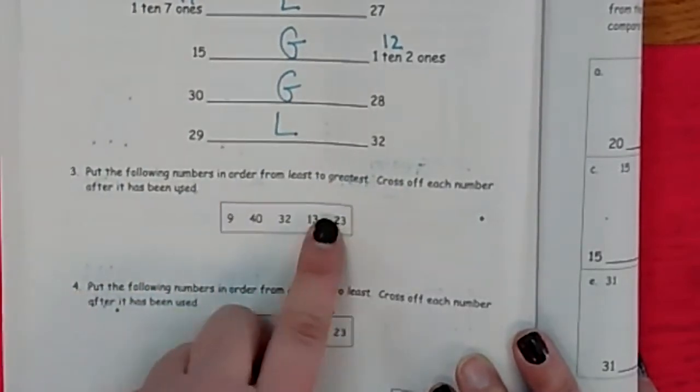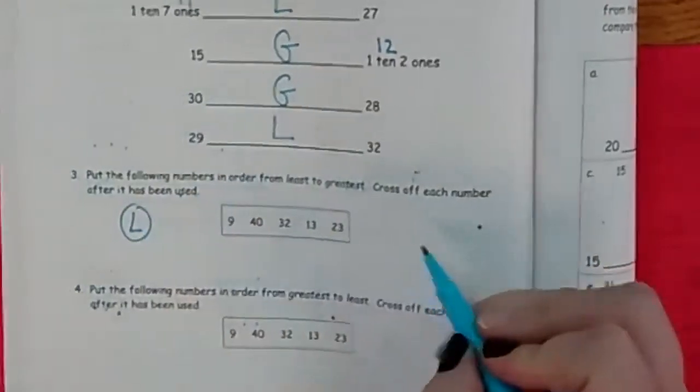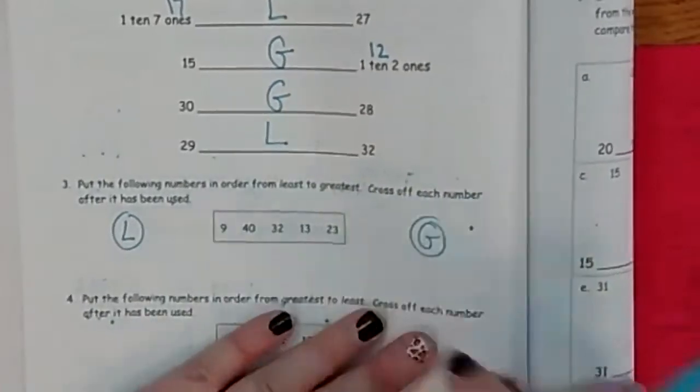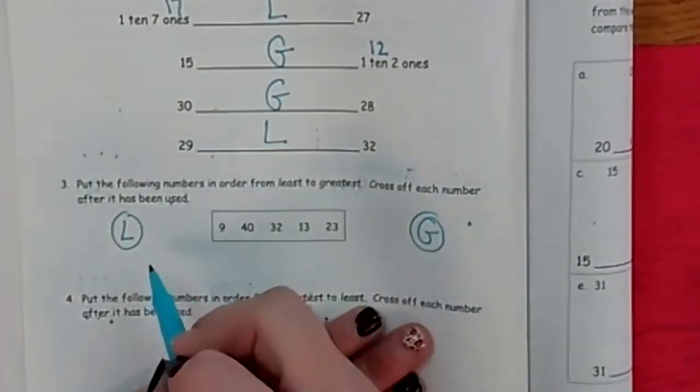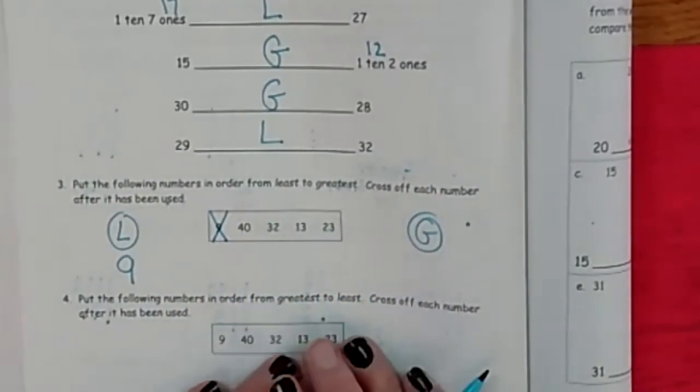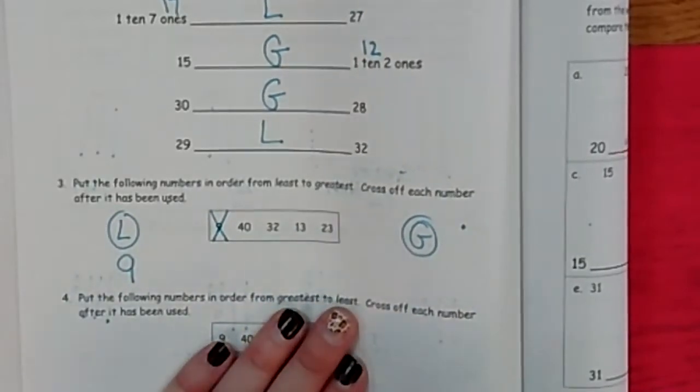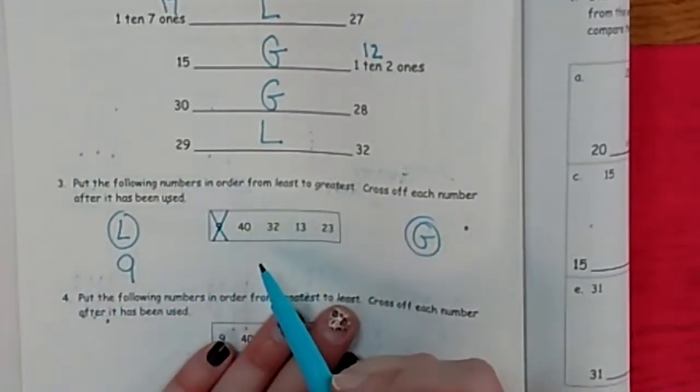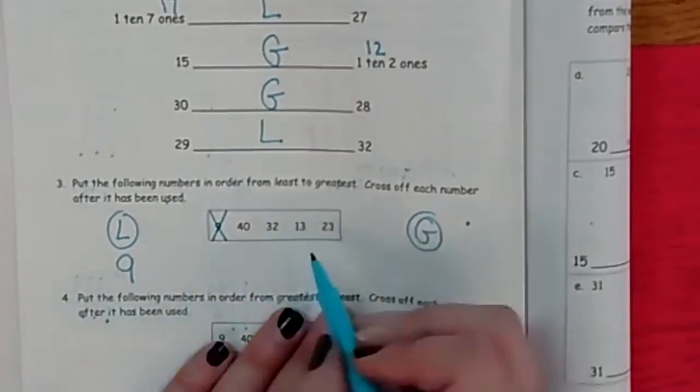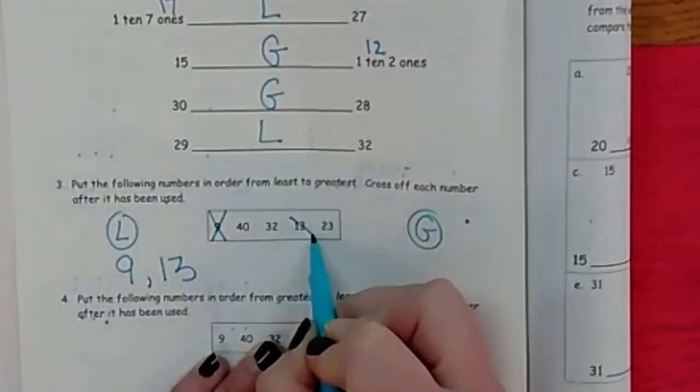This is where they try to trick us again, but we don't get tricked. We need to put these in order from least, I'm going to put a letter L over here, to greatest, put a letter G over here. So look here in this box, find the smallest number. You're right. So put the nine by the L and then cross it out because we did it. Try to keep them neat and separated because you don't want to mix them in together or it doesn't turn into a different number. You're right. Now who comes after the nine? Yeah, 13. So I'm going to put a little comma and write 13 and then cross it out. I'm done.